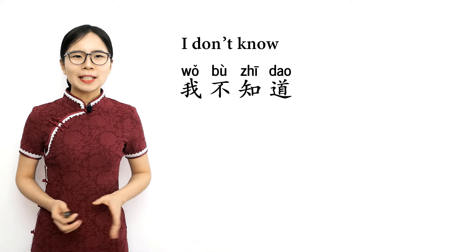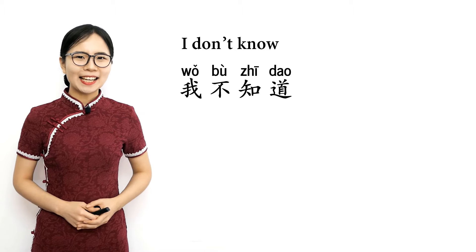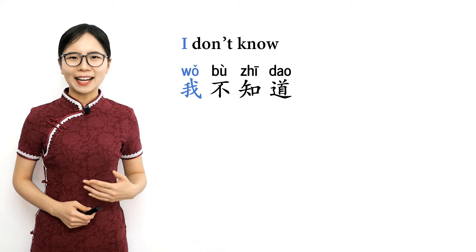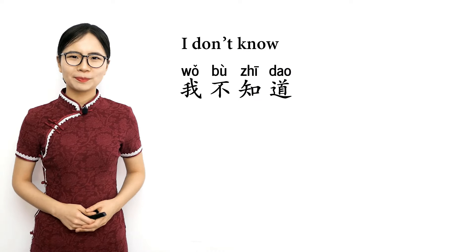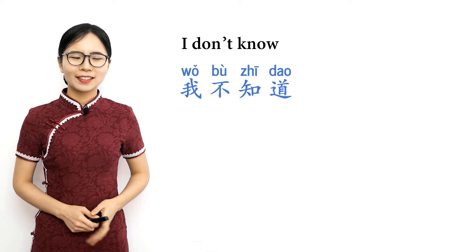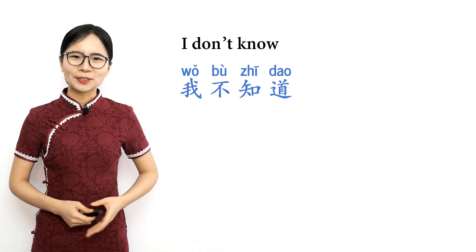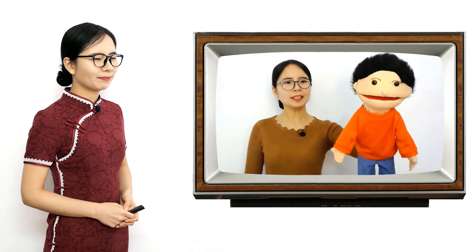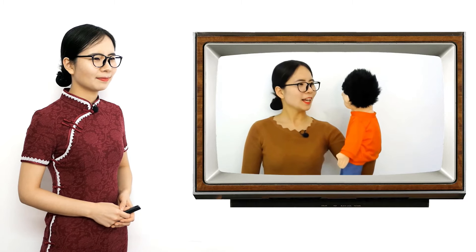Sometimes when someone asks you a question and you don't know the answer, you can say 我不知道 — I don't know. 我 means I, 不 means not, and 知道 means to know. Please repeat after me: 我不知道, 我不知道 — I don't know. 他是医生吗？ — is he a doctor? 我不知道 — I don't know.